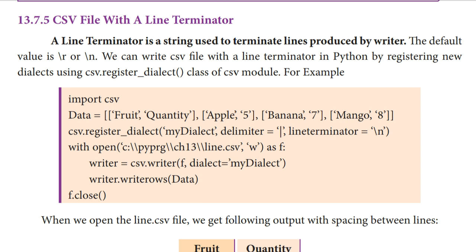Here one example program is given. As usual, first we import the CSV module. Next we have a list — the list name is data — with three records, where the first line is the field/column name. Next, we use csv.registerDialect with delimiter as pipe and line_terminator as \n — this is the new dialect we are registering. Then we open the CSV file in write mode, with F as the file object, and use the writer method: writer = csv.writer(f, dialect='my_dialog'), applying the registered dialect.